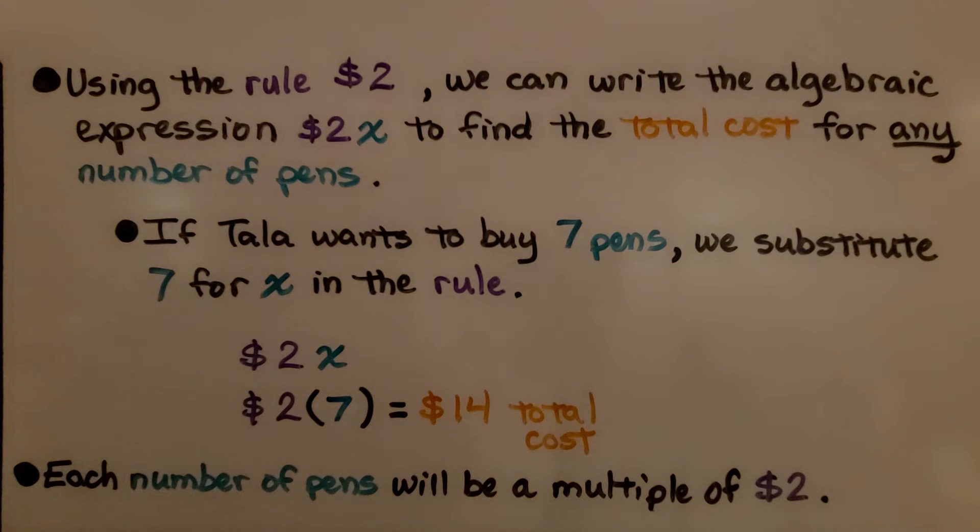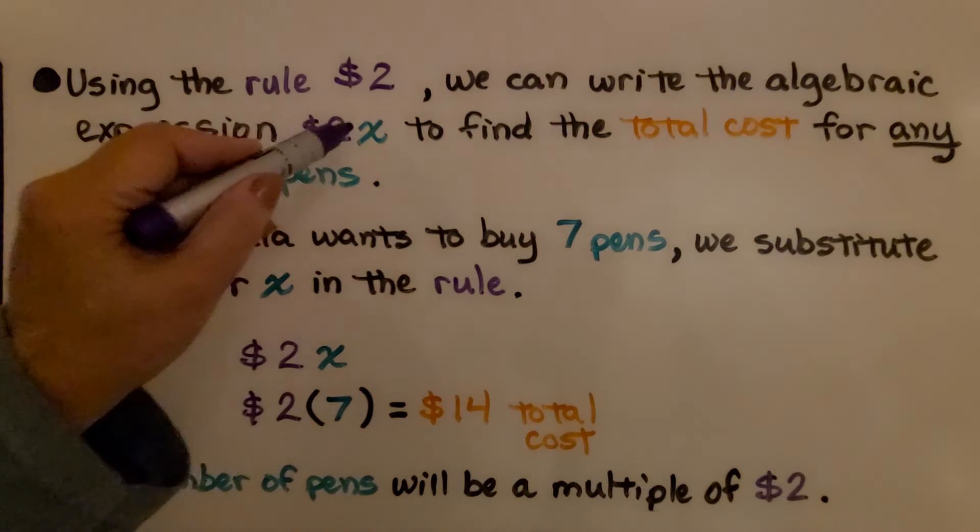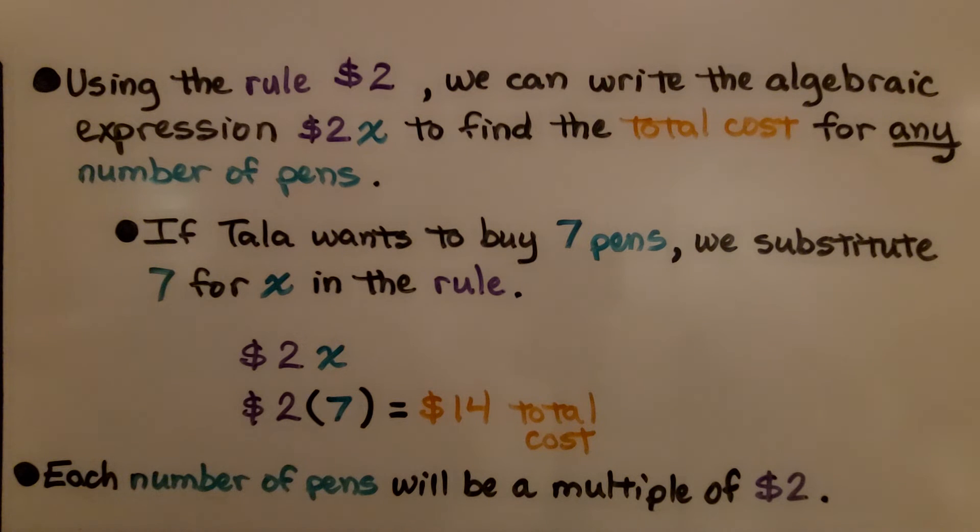Using the rule, we can write the algebraic expression $2x to find the total cost for any number of pens. If Tala wants to buy 7 pens, we substitute 7 for x in the rule. We have $2x, we do $2 times 7, that's $14 total cost. Each number of pens will be a multiple of $2.